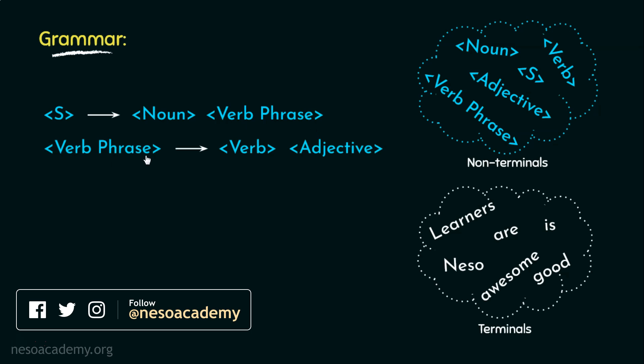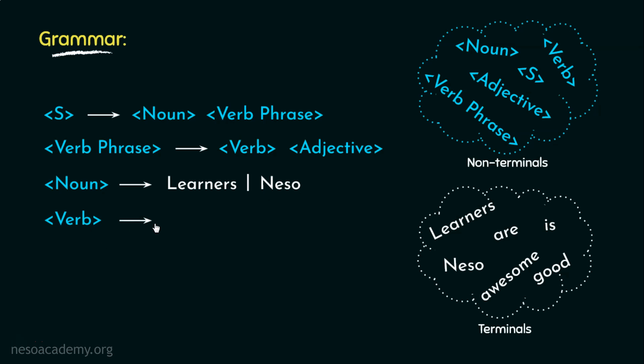Then again, the verb phrase can be written as verb followed by adjective. Now, noun can be written as either learners or neso. Similarly, verb can be written as either are or is. Finally, adjective here can be written as either awesome or good.